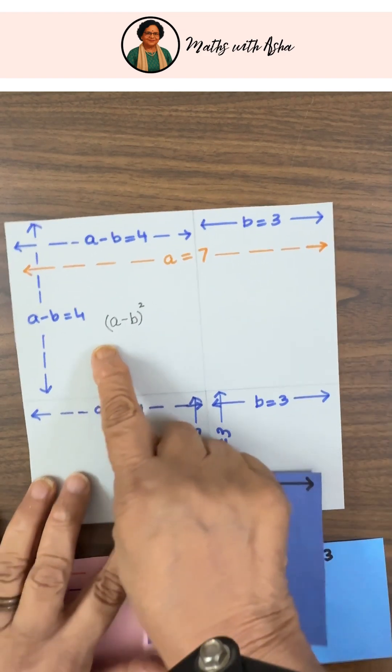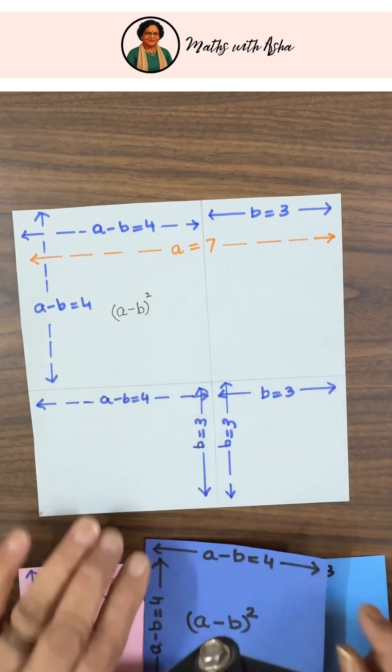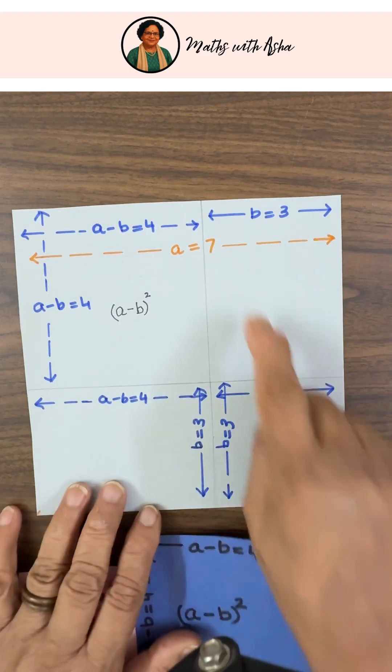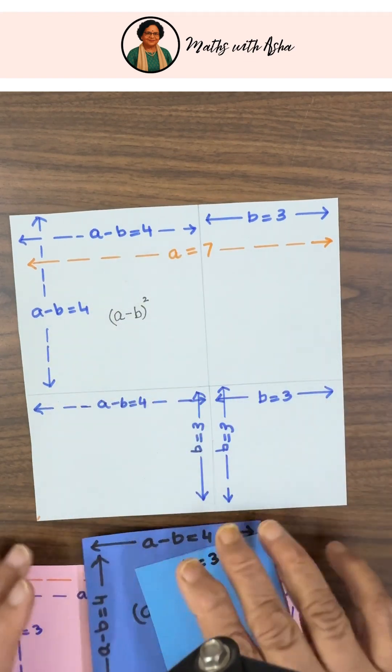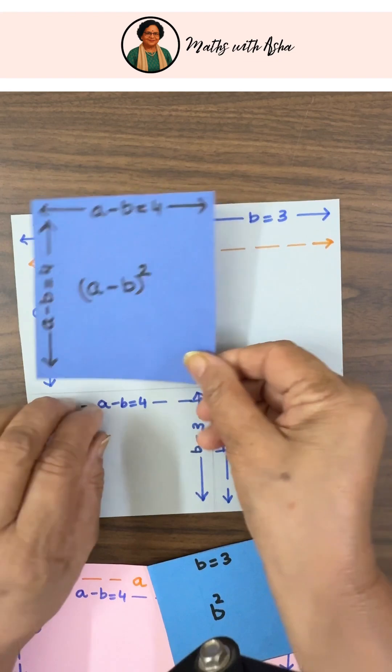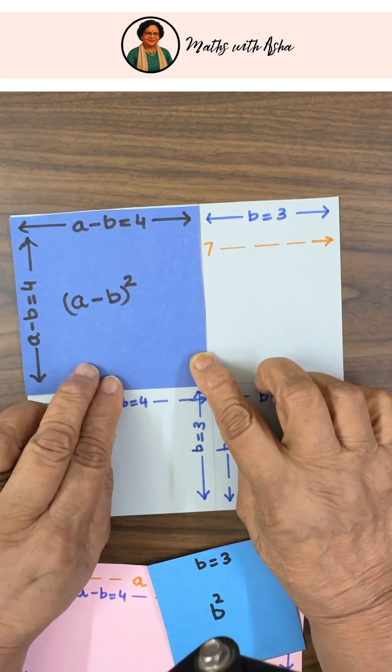So what we have taken is a square of side A. The value of A we have taken to be 7 and of B we have taken to be 3, so that A minus B is 4. We have cut out a square of side A minus B, which is 4.